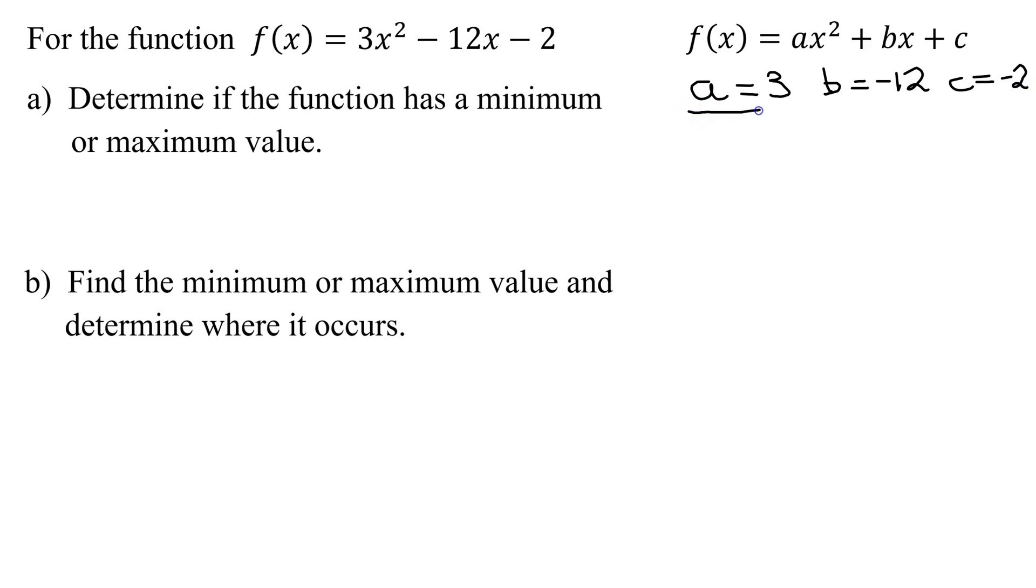The value of a determines if the parabola opens up or down. In our case, a is 3, that is greater than 0, it's a positive number, and if a is positive, the parabola will open up. So if I sketch my parabola, it's going to look something like this. And looking at that parabola, does it have a minimum or maximum value?